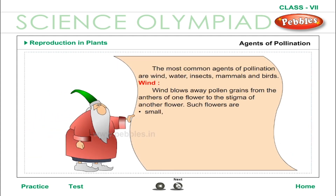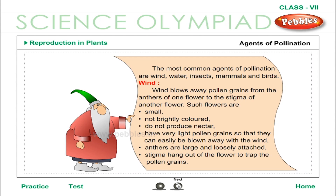Agents of Pollination: The most common agents of pollination are wind, water, insects, mammals and birds. Wind blows pollen grains from the anthers of one flower to the stigma of another flower. Such flowers are small, not brightly coloured, do not produce nectar, have very light pollen grains so they can easily be blown away. Anthers are large and loosely attached.